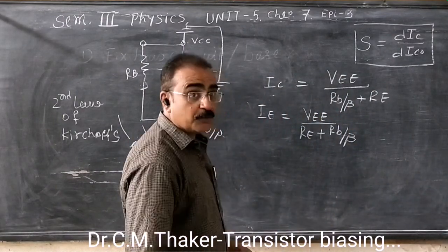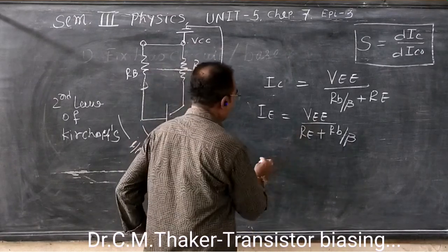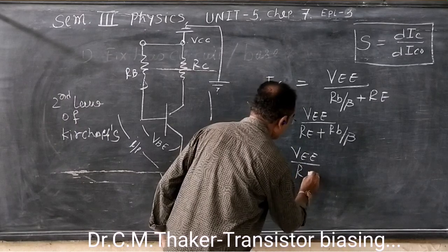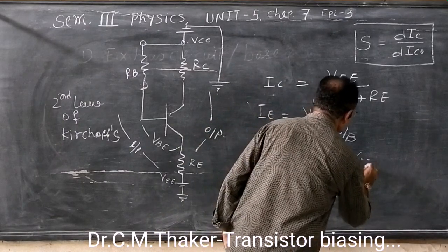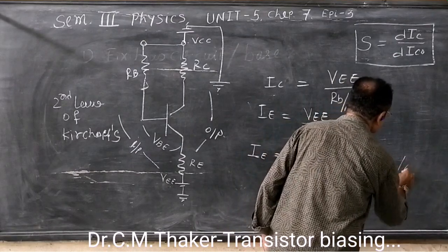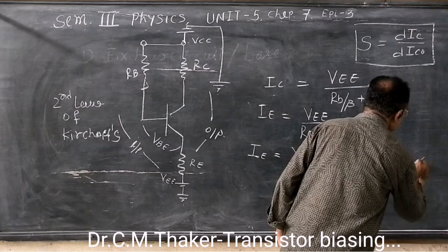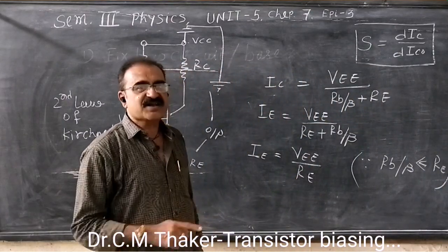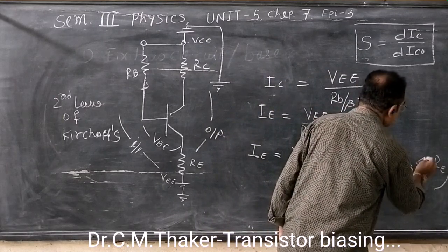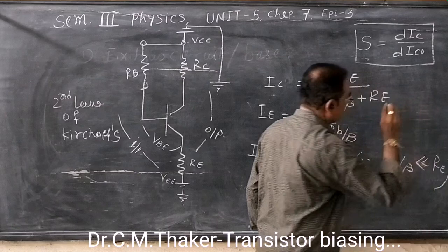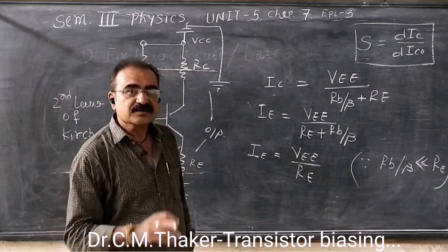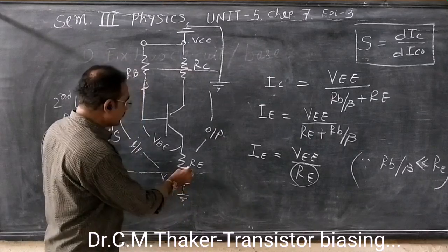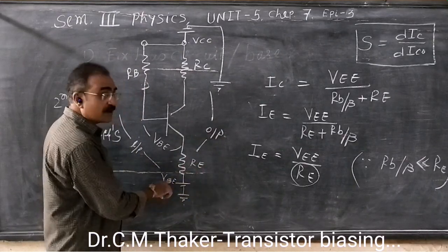So for this answer, what to do? That this circuit must depend on IE is equal to VEE upon RE. That means RB upon beta is very much less than RE. Very much less than. This is the sign of very much less than. And that is why it is needed that RE has the bigger value, larger value. And once RE has the larger value, obviously we have to connect extra power supply to this circuit.